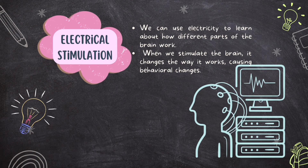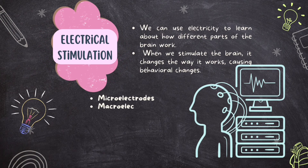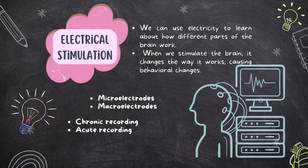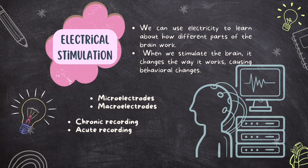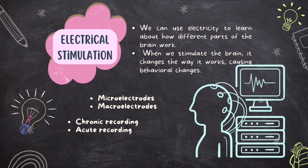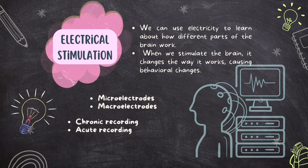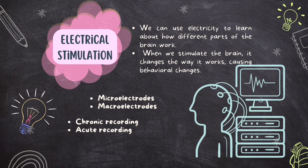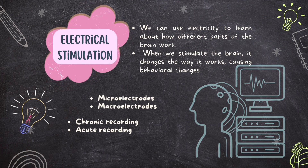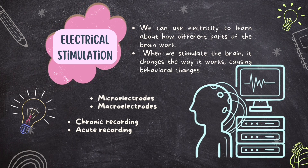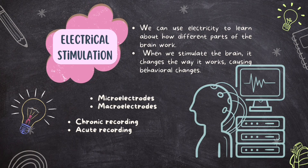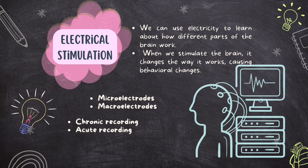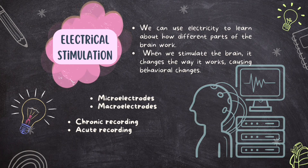The fourth method is electrical stimulation. By stimulating the brain with tiny electric signals, we can observe how different parts react and how behavior changes. Two types of electrodes are used: micro electrodes, which are super-thin metal wires, and macro electrodes, made of stronger wires. They are placed on the scalp or inside the brain to record how groups of nerve cells, called tracts, work together. Chronic recording is done over a long period as an animal recovers from surgery, while acute recording focuses on a specific nerve pathway.